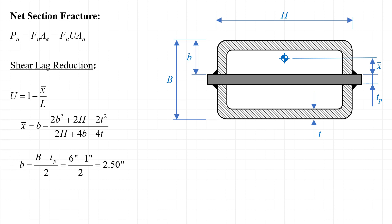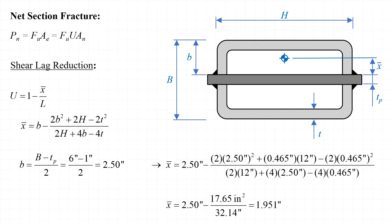So we can calculate the value of lowercase b, and for this case we find that it's equal to two and a half inches. And then we can substitute those values into our equation for X-bar, and find that X-bar is equal to 1.951 inches. Finally, we substitute that into our equation for U, using the weld length of 12 inches, and we find that our shear lag reduction coefficient U is equal to 0.8374.